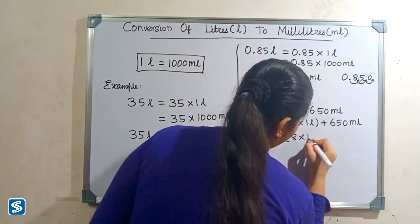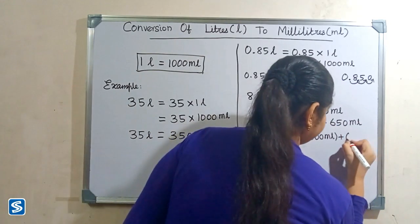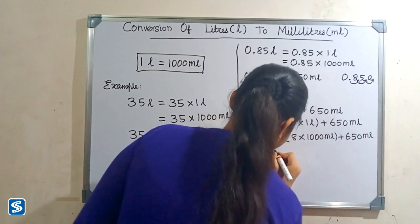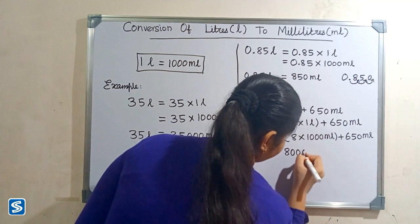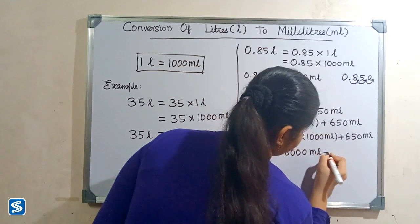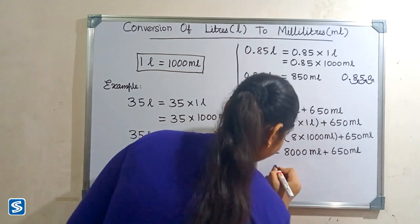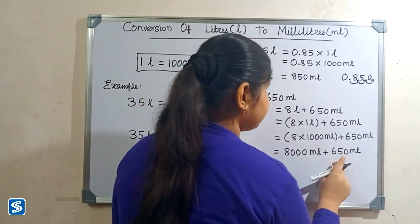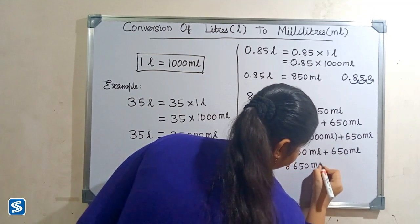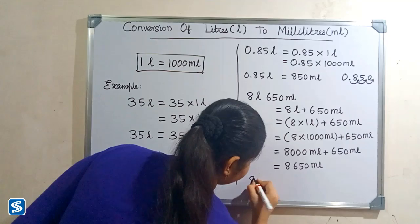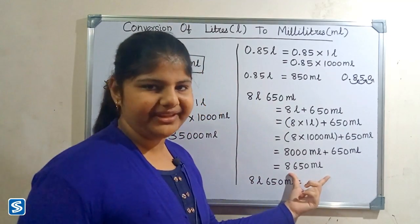8 multiplied by one thousand milliliters will be 8,000 milliliters. 8,000 milliliters plus 650 milliliters will be 8,650 milliliters. So 8 liters 650 milliliters is equal to 8,650 milliliters.